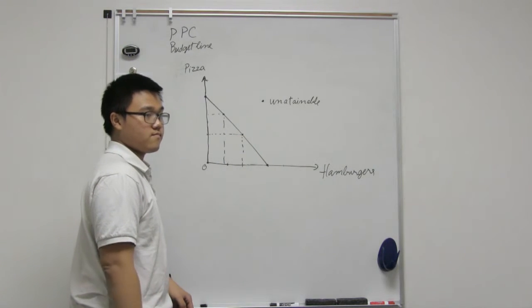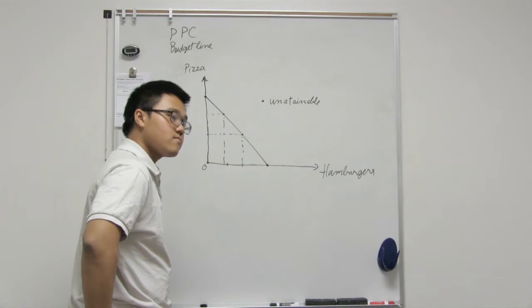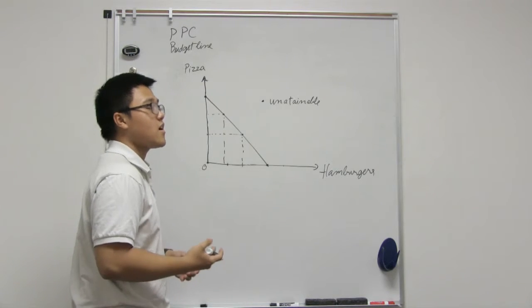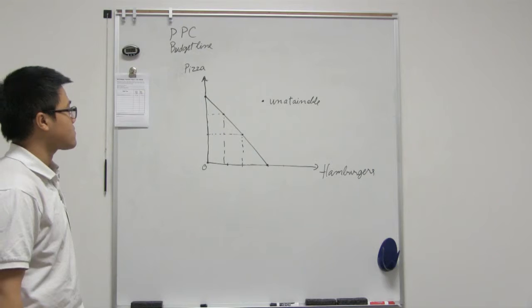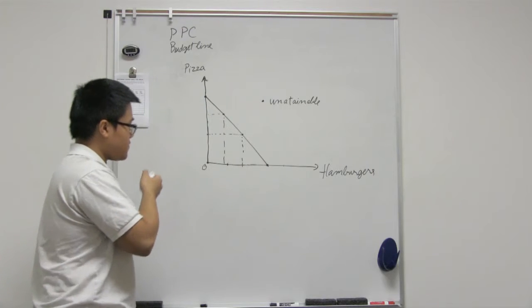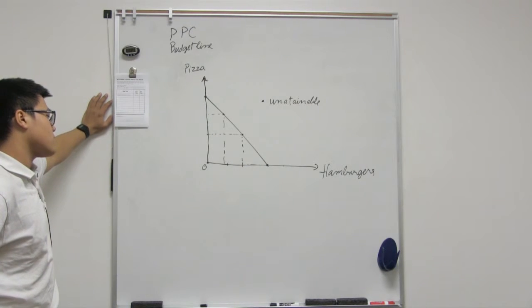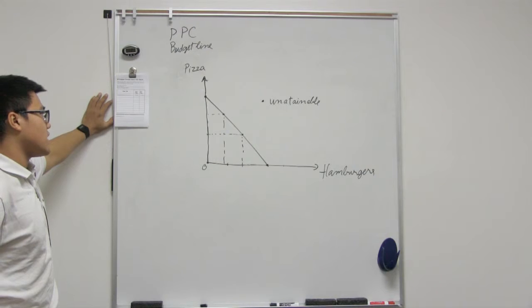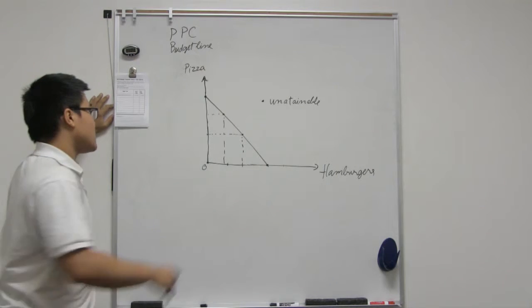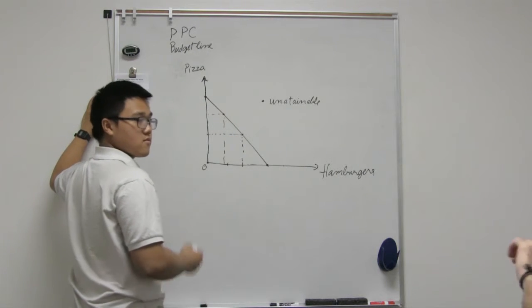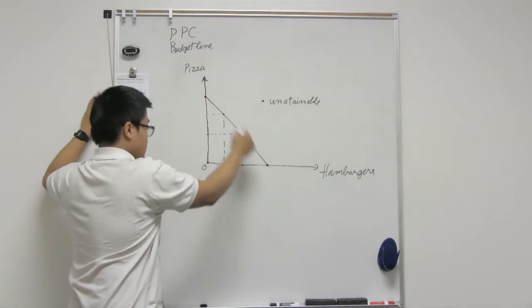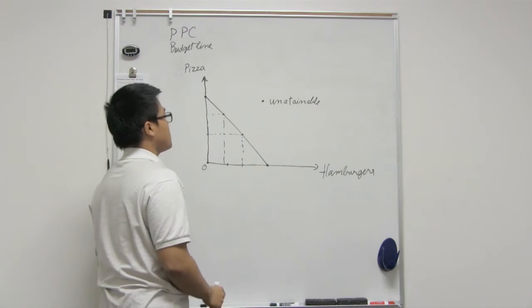So the budget line is personally for an individual, it's not for like with a PPC that's like a company or an economy. It's like an economy. For this, the budget line is actually an individual person's. But it can be a budget of a company, and anything that has to do with budget. So anything on that line implies you're using all of your money. And as such, anything inside of the line would mean?